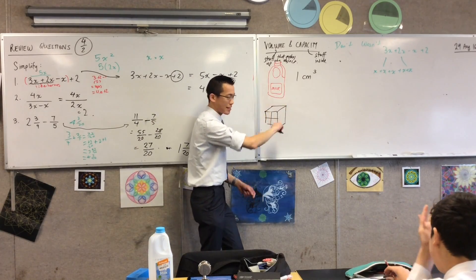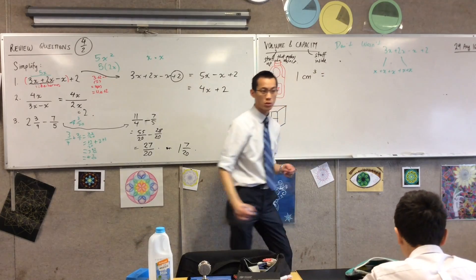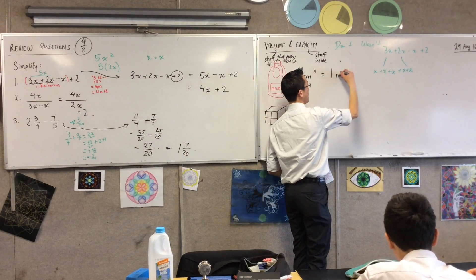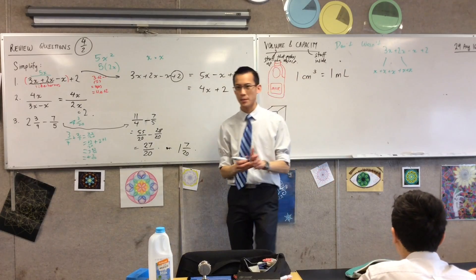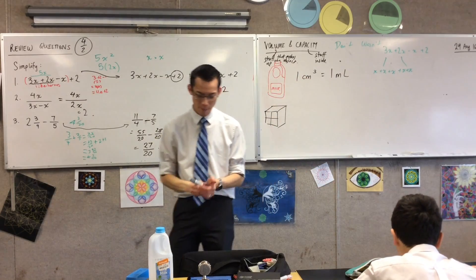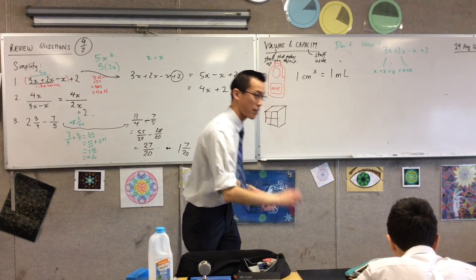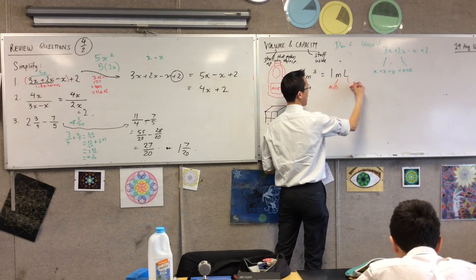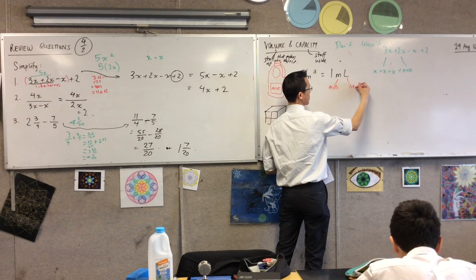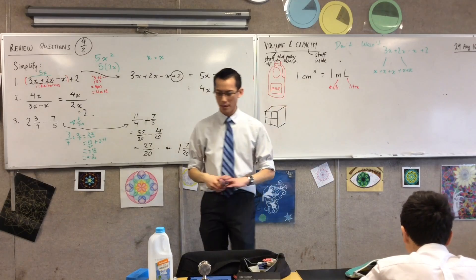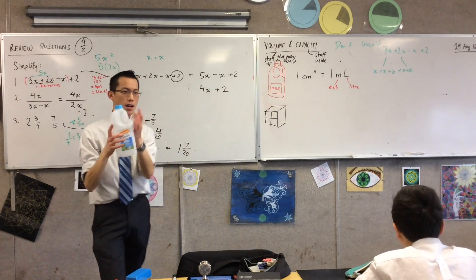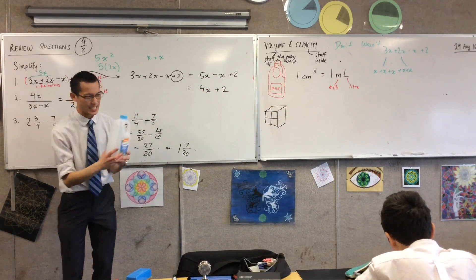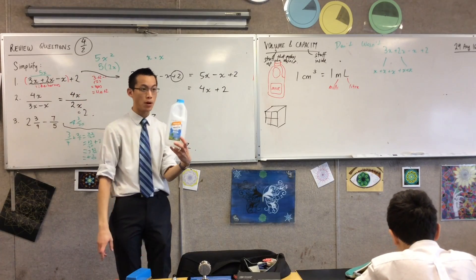This one cubic centimetre is exactly equal to — we define it to be equal to — one millilitre. We abbreviate that to mils, but it's worth noting: 'milli' means a thousandth, and 'litre' is the unit. So, how many millilitres are in this two litre bottle? Think about it — think about what milli means.